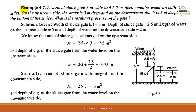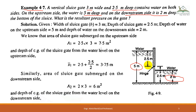Coming towards a numerical example: a vertical sluice gate is 3 meters wide and 2.5 meters deep, containing water on both sides. On the upstream side the water is 5 meters deep, and on the downstream side it is 2 meters deep. The top hinge of the sluice gate is located at 2.5 meters depth. We need to find the resultant pressure and its location from the bottom.